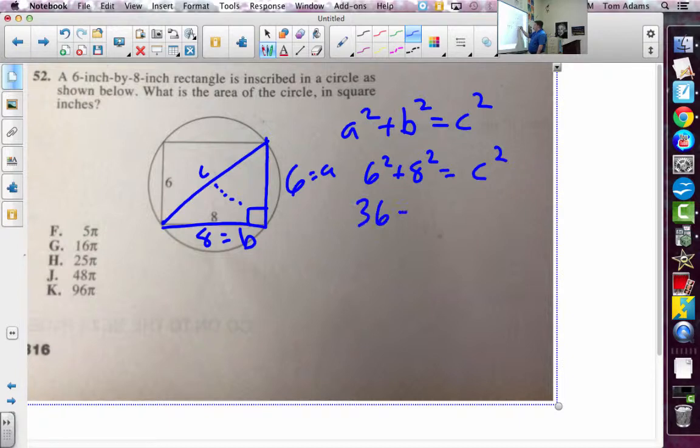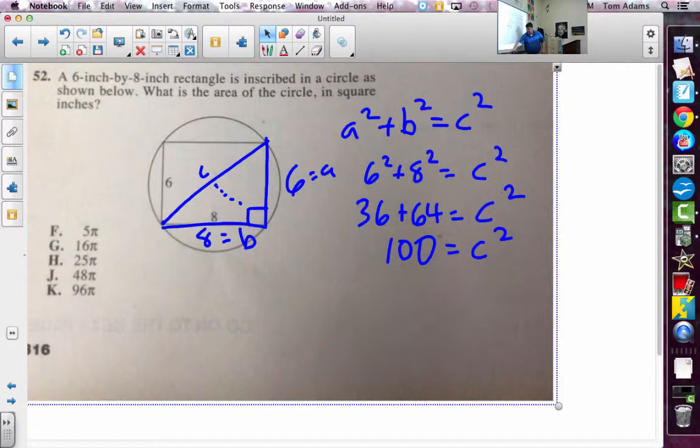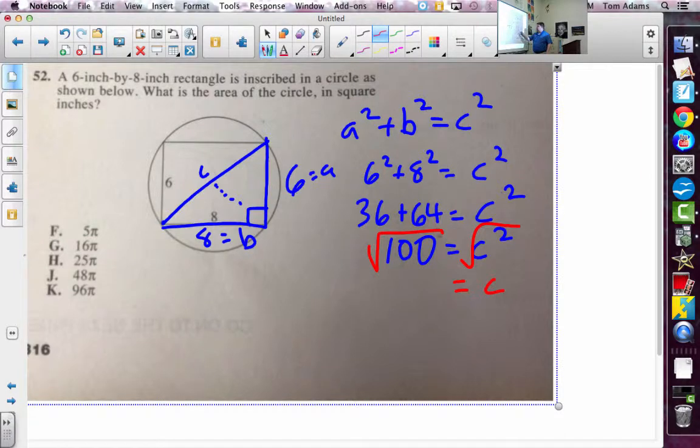This is 36 plus 64 should equal c squared. So c squared equals 100, but if I take the square root of both sides, this just becomes c, and the square root of 100 is 10.